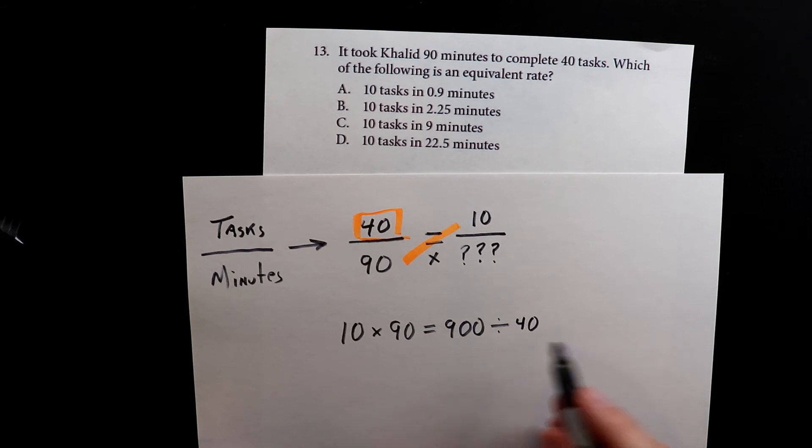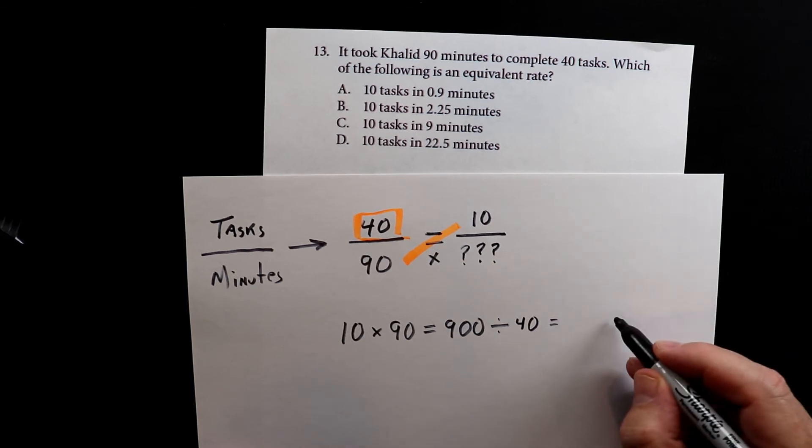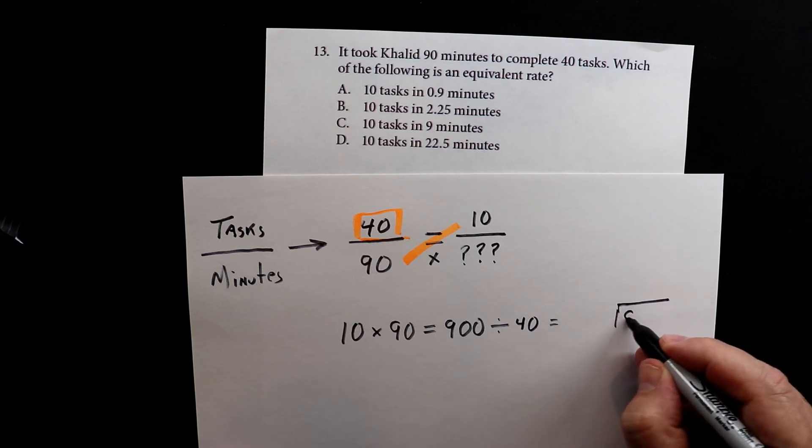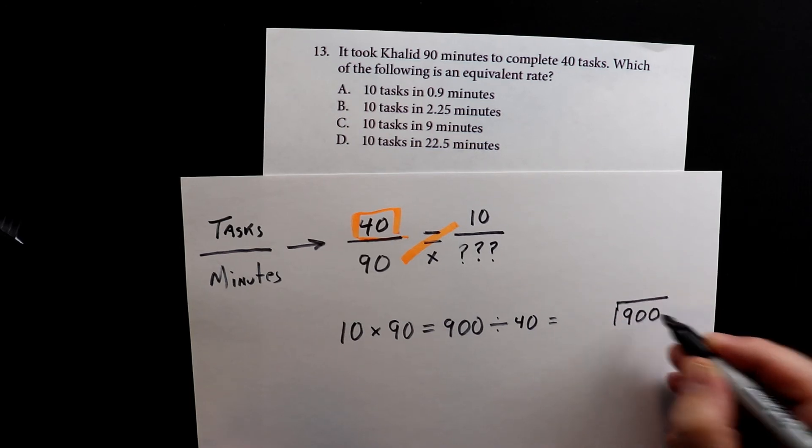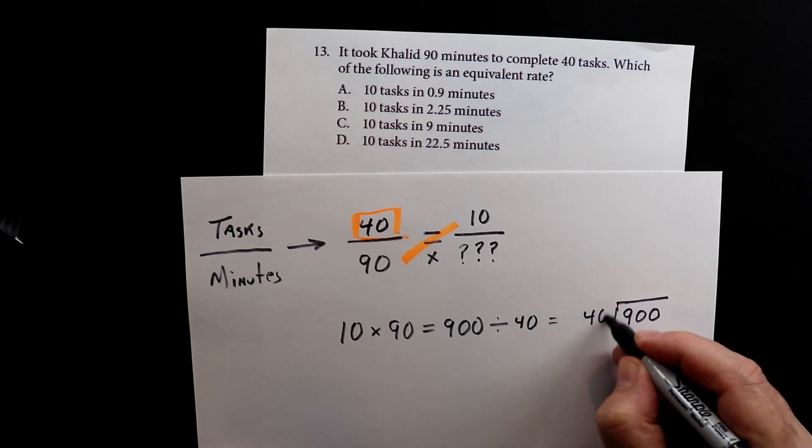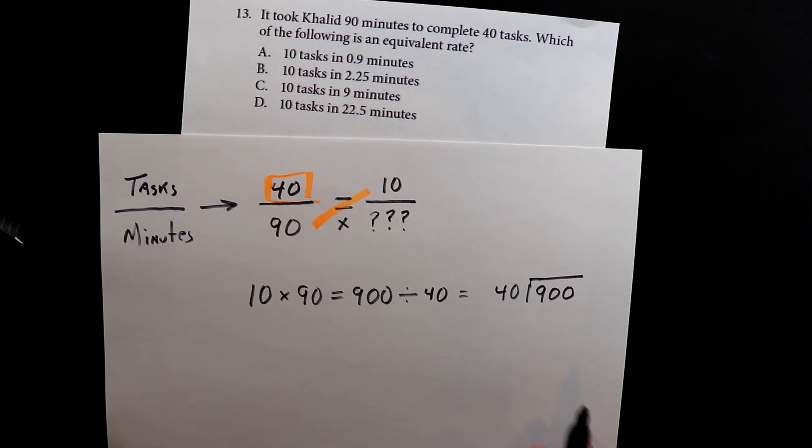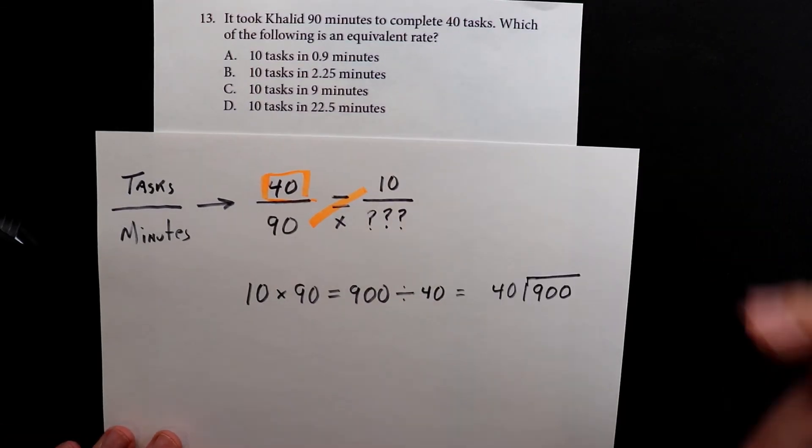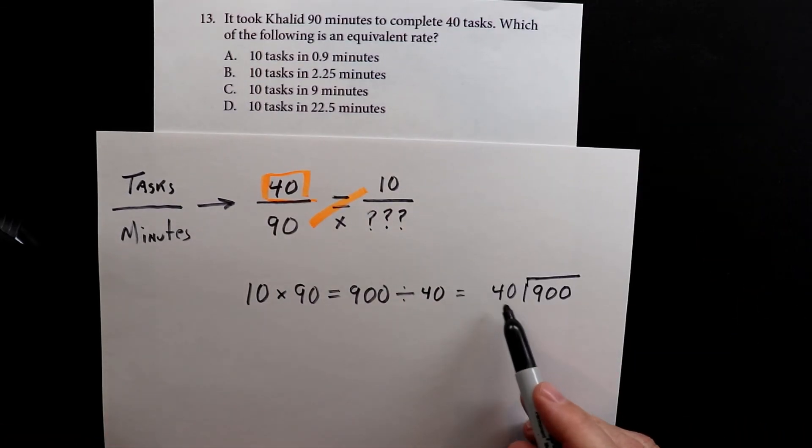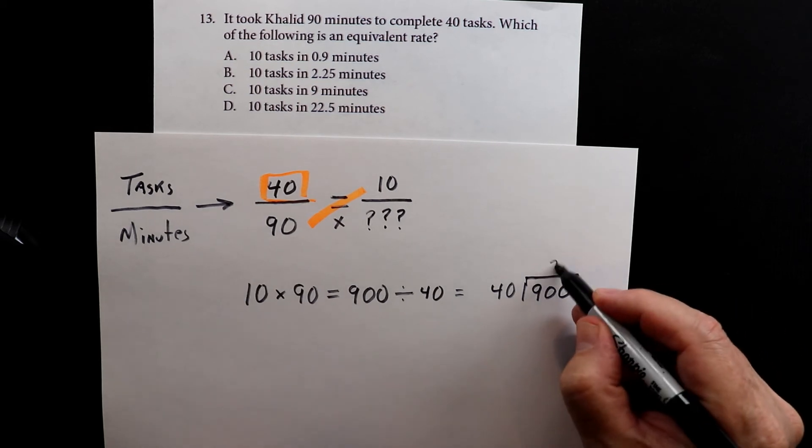So nobody divides this way. We always set it up where it looks like this: 900 divided by 40. So 900 goes inside the house, 40 goes outside the house. So 40 goes into nine zero times, so I move over one. 40 goes into 90 twice.